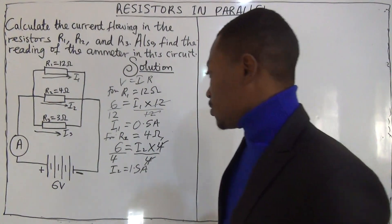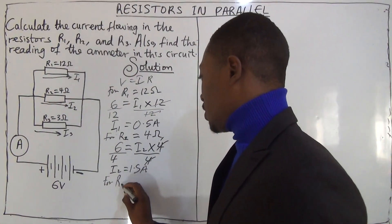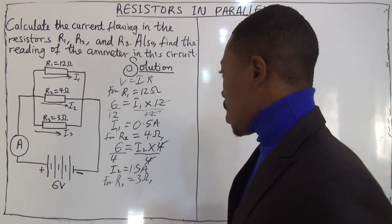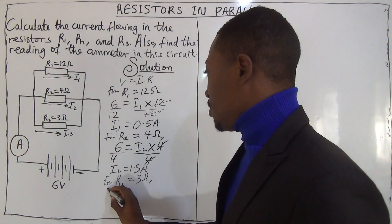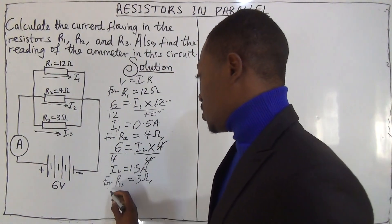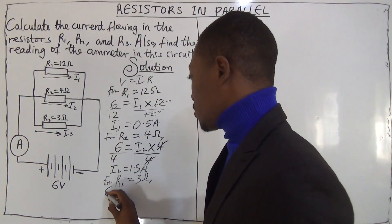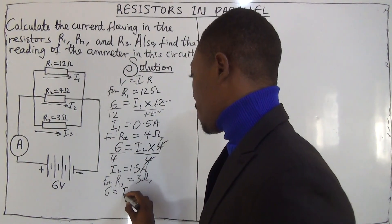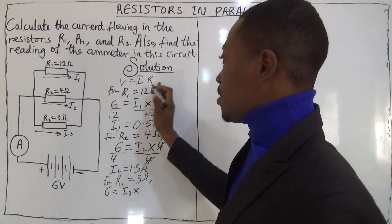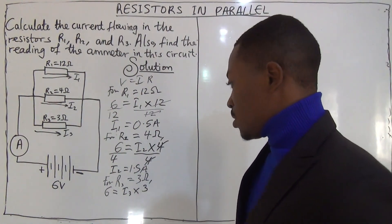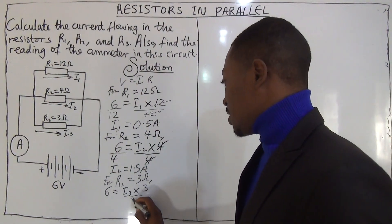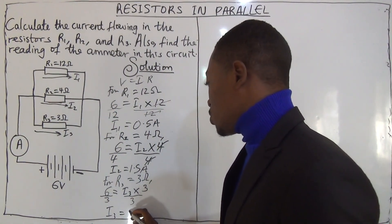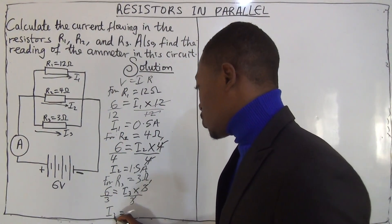We do the same thing for R3. R3 is 3 ohms. Using the same formula, the voltage across R3 is 6 volts, so 6 equals I3 multiplied by 3. Dividing both sides by 3, we get I3 equals 6 divided by 3, which is 2 amperes.